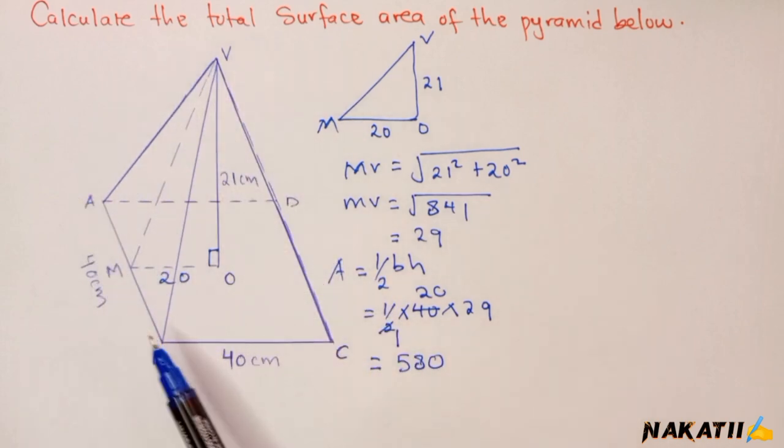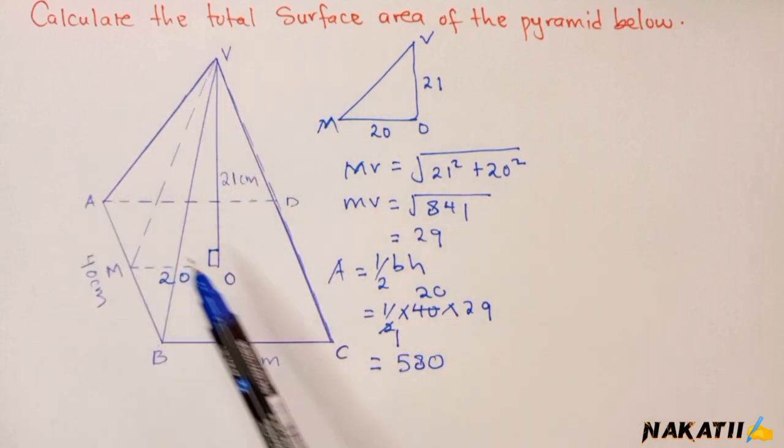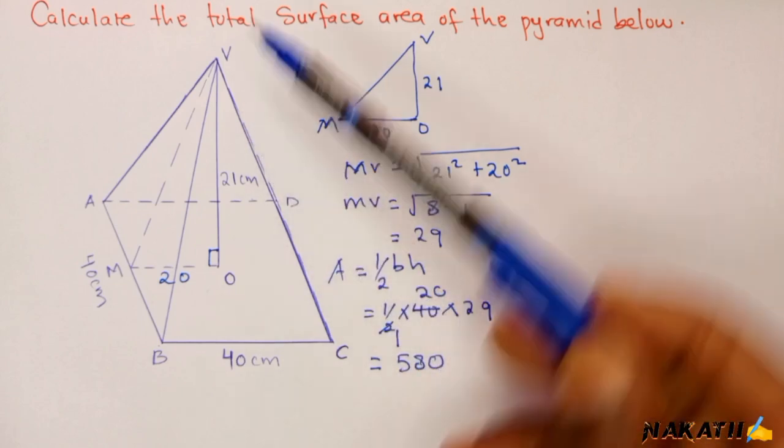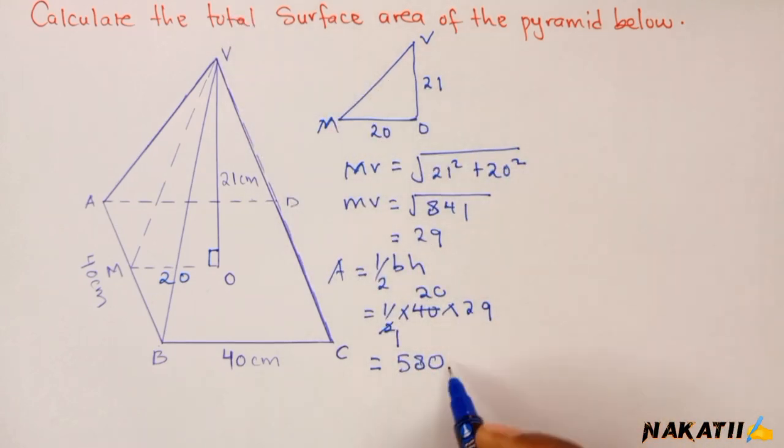But there are four: one, two, and this one hidden here, and the other one, which is four. Therefore we're going to multiply this by four. If you do this, you're going to get 2320 centimeters squared. We have found the area of the four triangular faces.